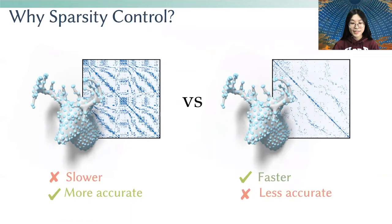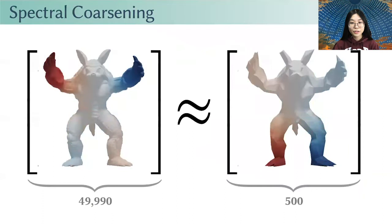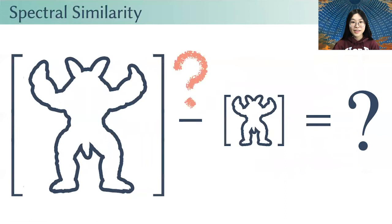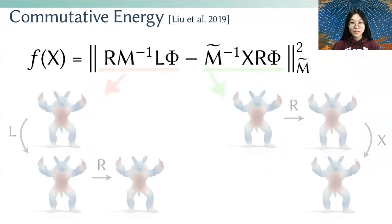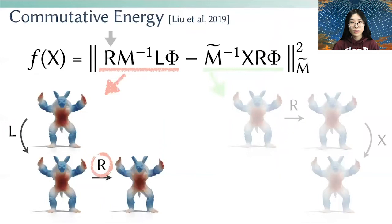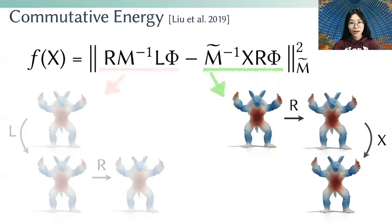In this video, we will talk about spectral coarsening, which enables us to significantly reduce the size of a discrete operator while preserving the spectral properties at the lowest frequencies. The question is: how can we measure the spectral similarity between two operators of different sizes? The state-of-the-art minimizes the commutativity energy. Intuitively, if the coarse operator X preserves the spectral properties of the original operator L, then given some functions phi on the original domain, first applying operator L and then restricting to the coarse domain via R should give the same result as first restricting via R and then applying the coarse operator X.